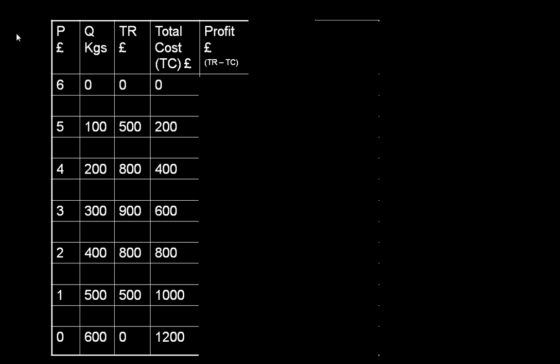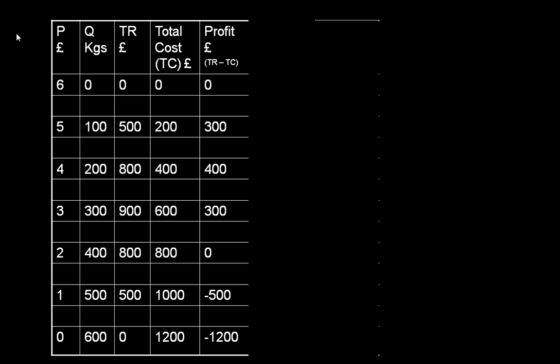Now, we can show how abnormal profit might arise, by putting together the information we have on revenue and costs. Total profit is the difference between total revenue and total cost. In this example, profit is maximized at a quantity of 200 kilograms of potatoes, and at this output, profit is 400 pounds.